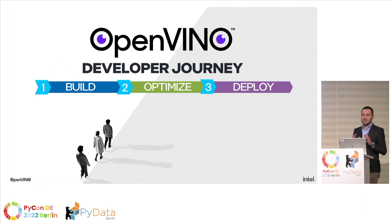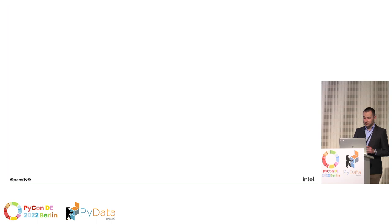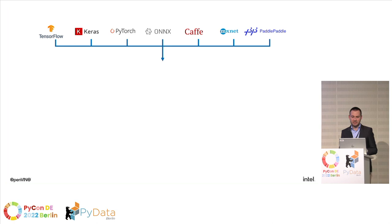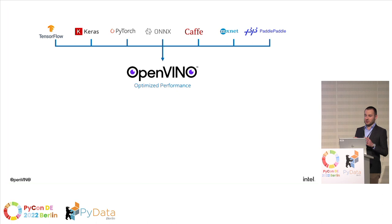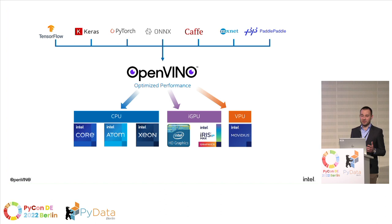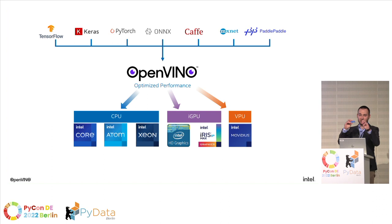Let's start the OpenVINO developer journey. Assuming you've trained your model in TensorFlow, Keras, PyTorch, ONNX, Caffe, MXNet, or PaddlePaddle — note that PyTorch isn't supported directly yet, but you can easily port your PyTorch model to ONNX. You convert your model to OpenVINO and then run it on Intel hardware: CPU (Core, Atom, Xeon), integrated GPU like Intel HD/UHD Graphics, Iris, or Iris Max, or a VPU like the Movidius Neural Compute Stick 2 — a USB accelerator that offloads inference without using your CPU or GPU resources.